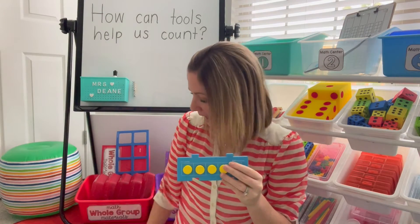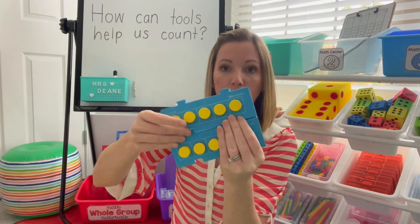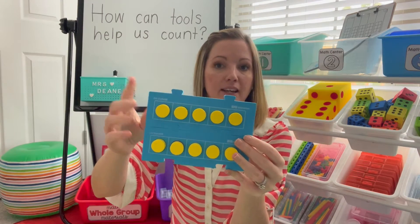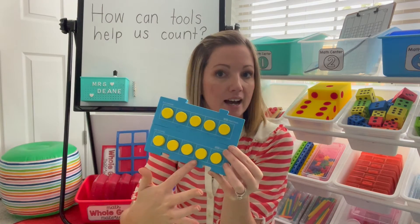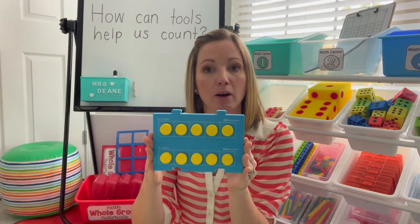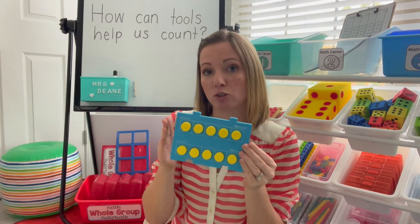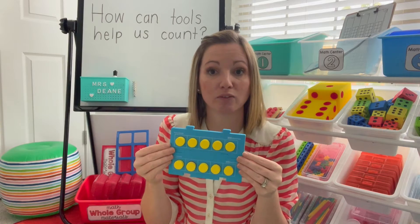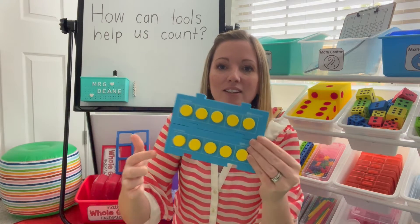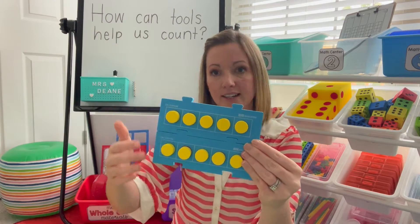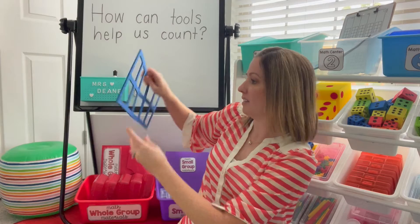When I add another five frame, ask: what do you notice about this tool? Students might say they notice there are two five frames, or there are ten dots. Then talk to them about how this is actually a different tool — when you combine two five frames, it's called a tens frame. Ask why it's called a tens frame, and they might say because there are ten spots.